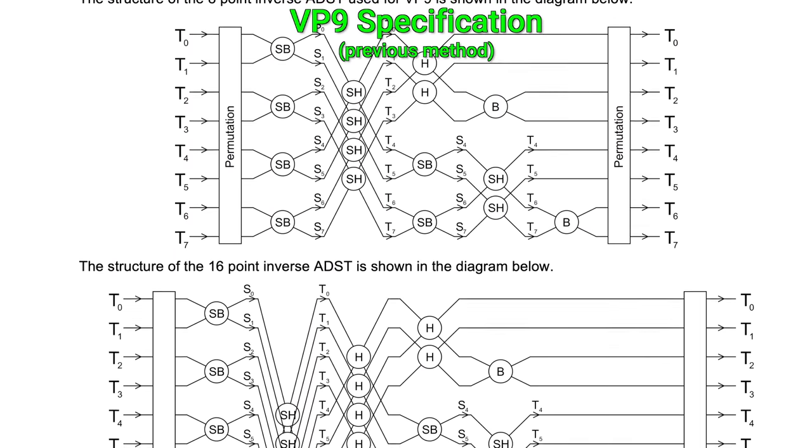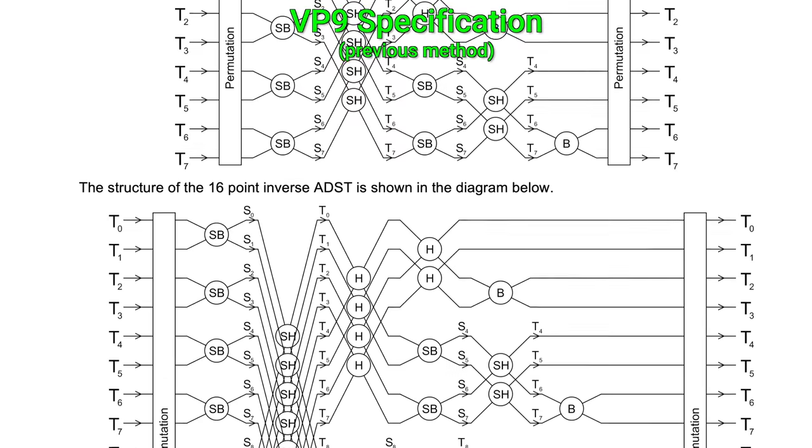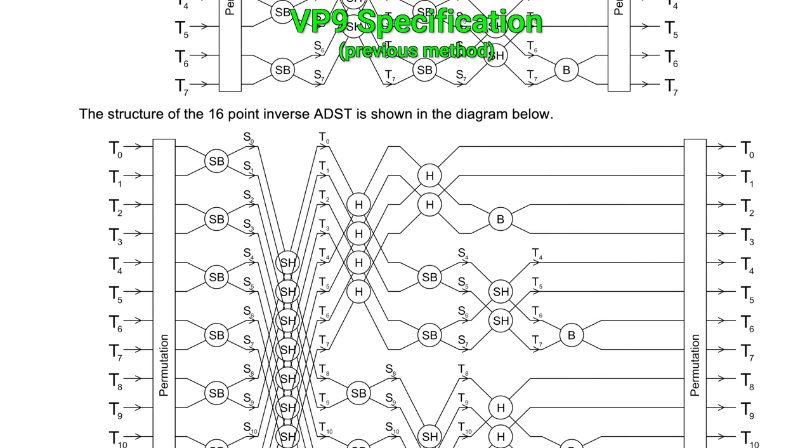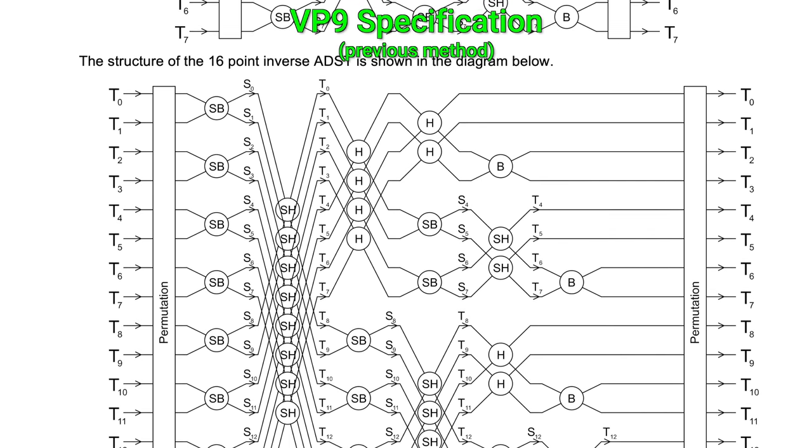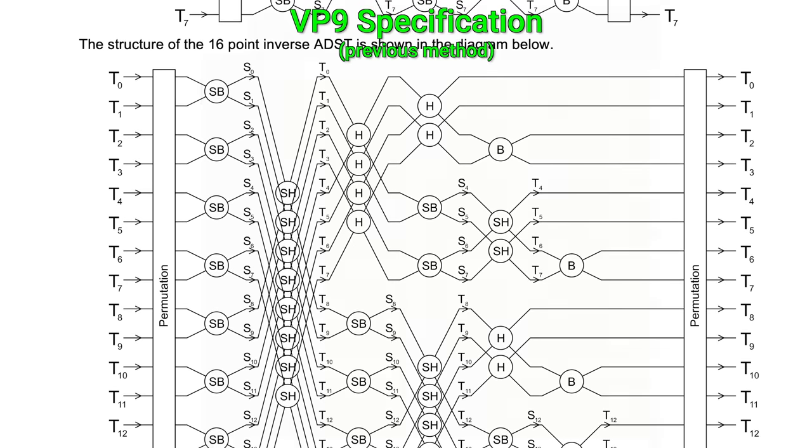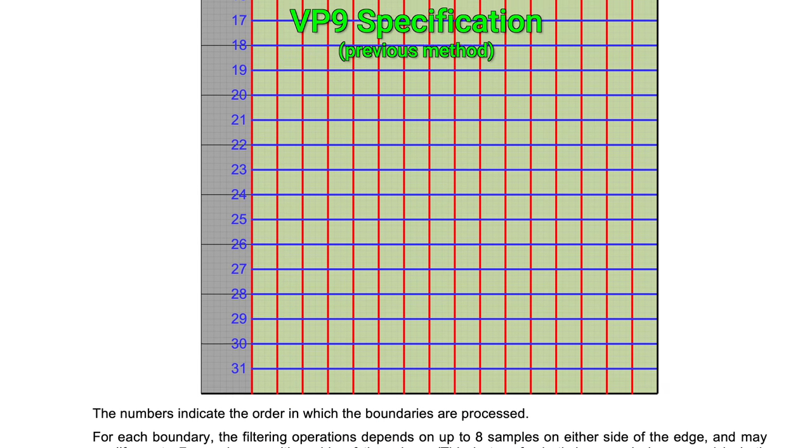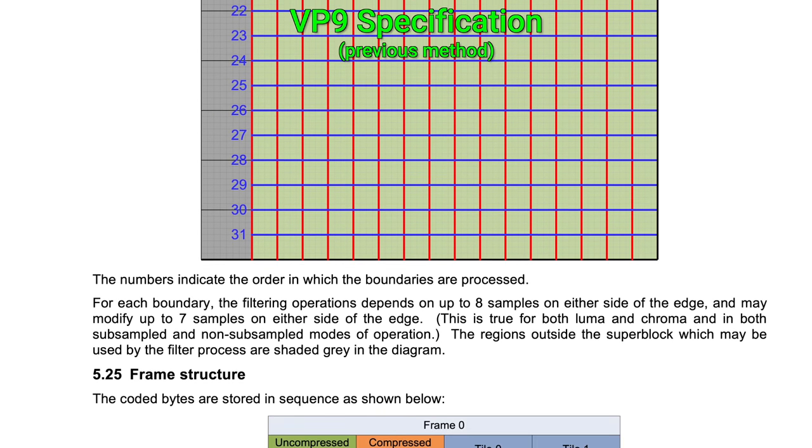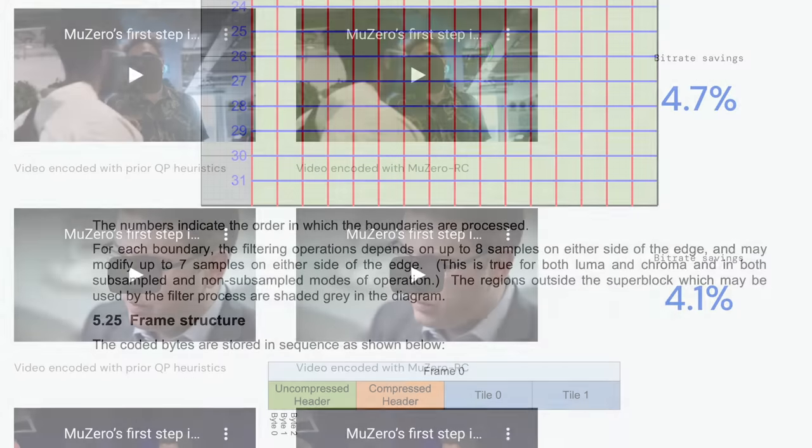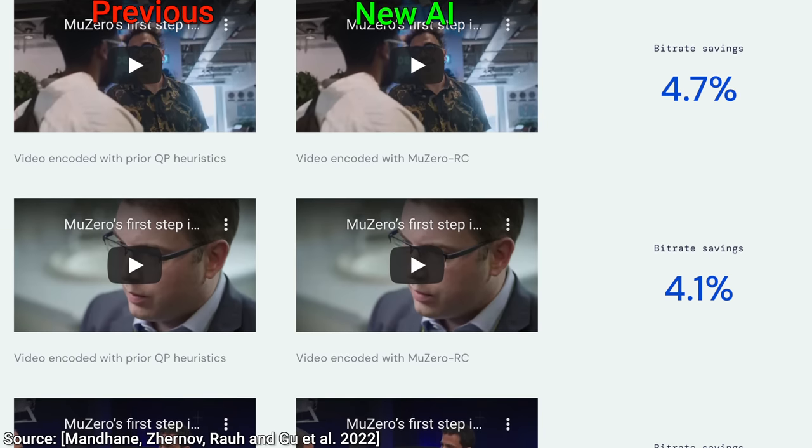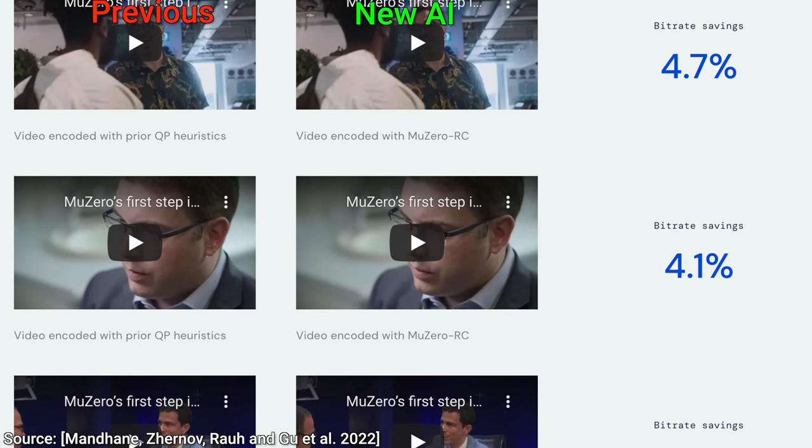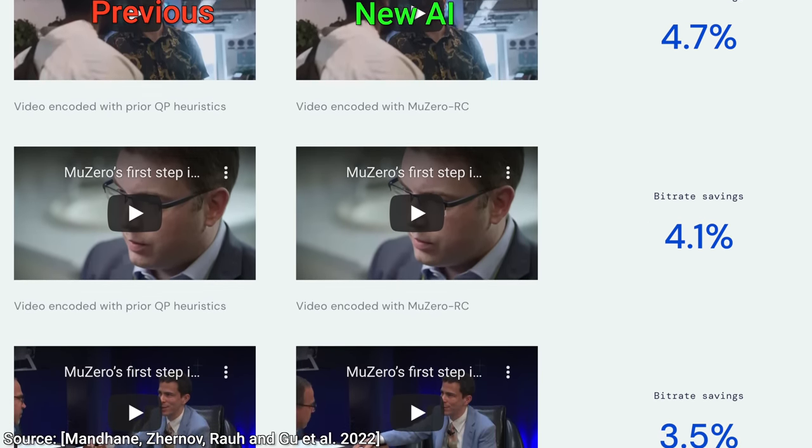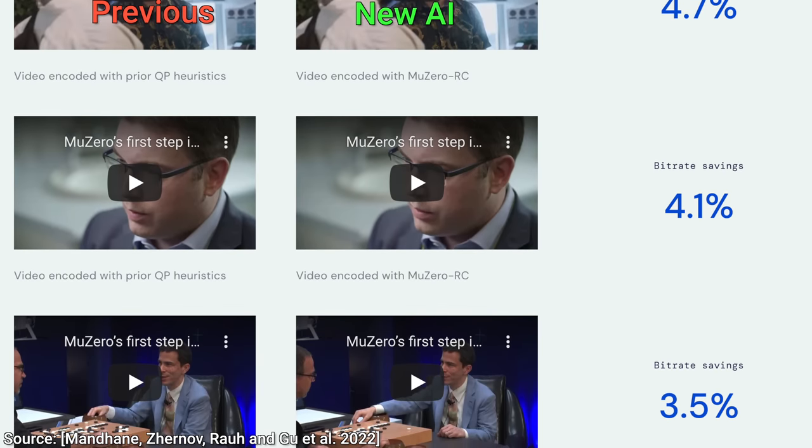Where every percent of improvement requires blood, papers and tears, and of course, lots of compute and memory. And this is just the first crack at the problem for DeepMind, and we get not 1%, but 4% essentially for free. That is absolutely amazing. My mind is blown by this result. Wow!